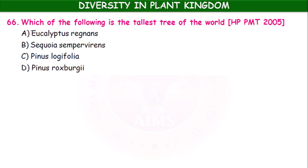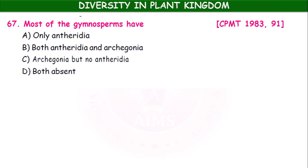Which is the tallest tree in the world? The options are Eucalyptus regnans, Sequoia sempervirens, Pinus longifolia, and Pinus roxburghii. The answer is Sequoia sempervirens. Most gymnosperms possess archegonia but no antheridia.